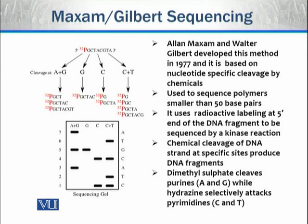Fragments are produced according to the base size, then separated through agarose gel electrophoresis, and the sequence is determined. In the diagram, the sequence can be seen: the first nucleotide is cytosine, the second thymine, the third adenine, and so on. Fragments are produced, separated by electrophoresis, and the sequence is determined.